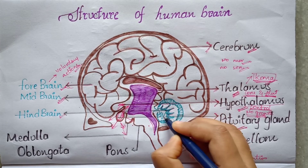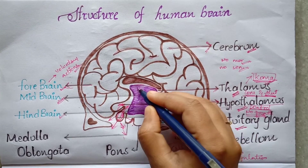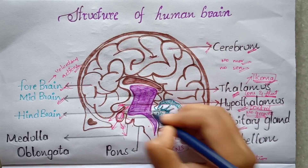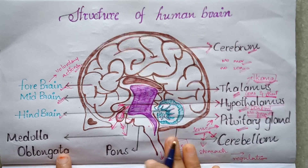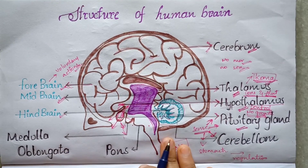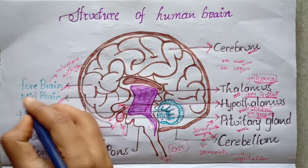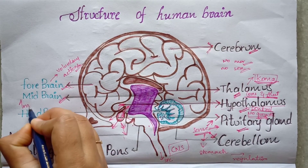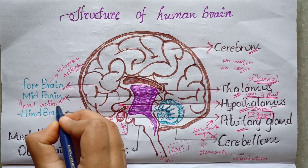Midbrain performs the involuntary actions, like heartbeat and digestion. The actions which are not in our control are called involuntary actions, and these are performed by the midbrain.